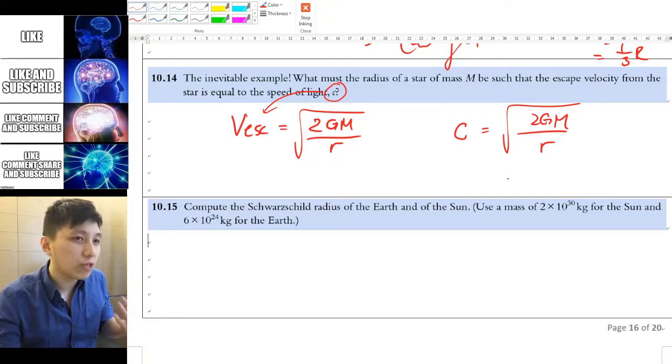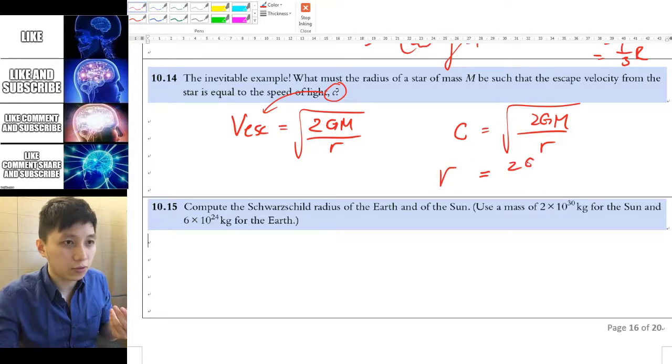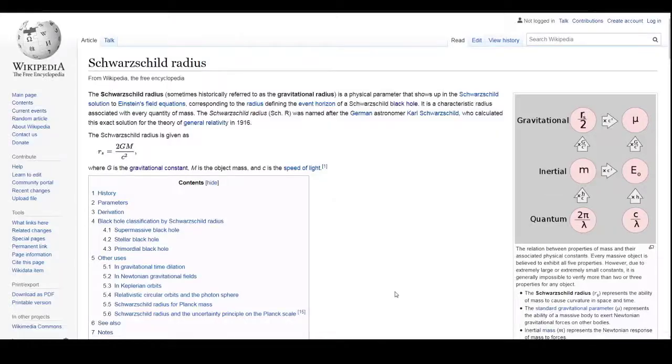If you really want to express r as a main term, then you can rearrange it and get c squared equals to actually r equals to 2gm over c squared. The r radius you find just now is actually called the Schwarzschild radius, which is the name after a scientist obviously.